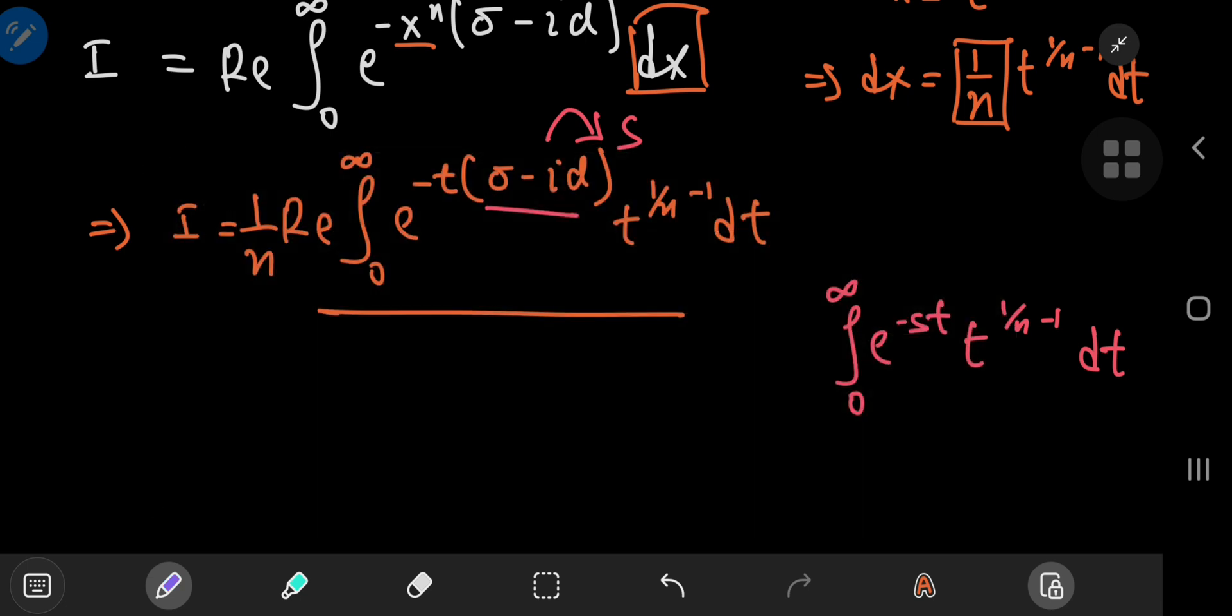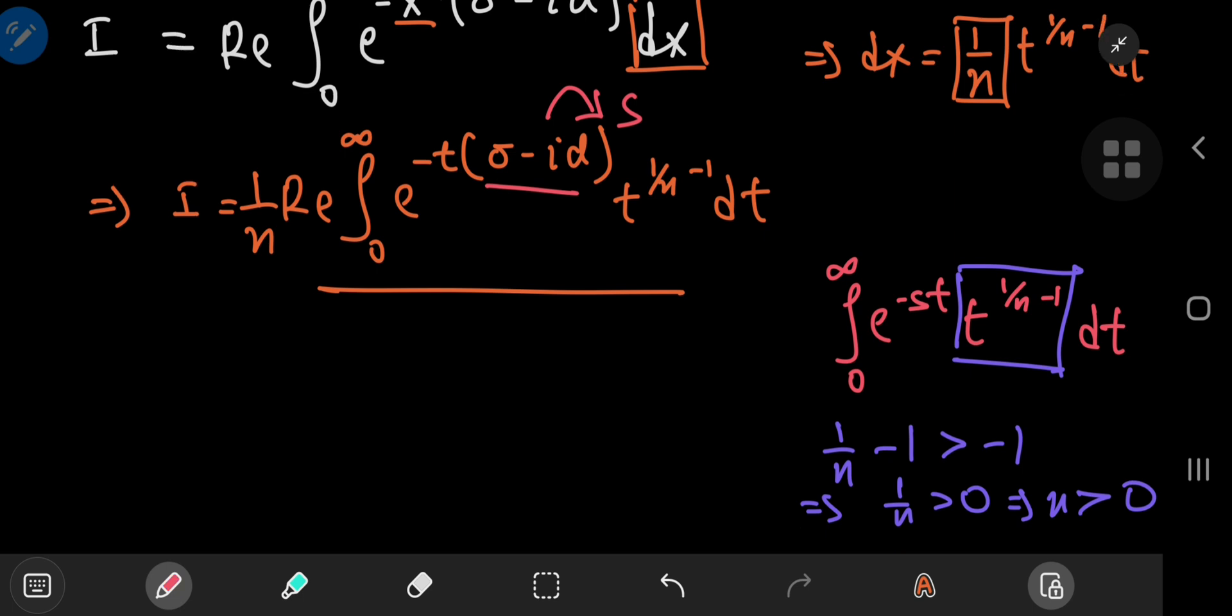However, before invoking the Laplace transform cheat code, we need the term that I've boxed in purple here. We need the exponent of the t variable that is 1 by n minus 1. We need it to be greater than negative 1, which implies that 1 by n is positive, which implies that n is positive. So that's one restriction we need on the n variable. We need n to be positive.